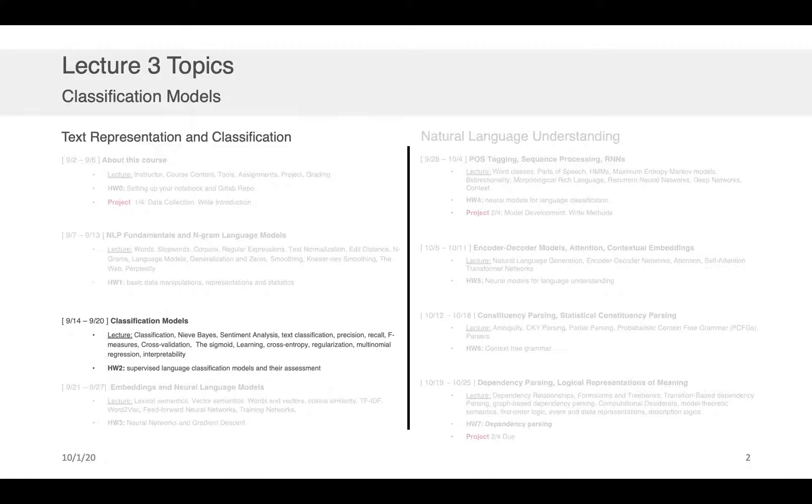Just a quick reminder, last week we spoke extensively about classification models. Specifically, we went through two examples or approaches to classification. The first was Naive Bayes, which represents a semi-Bayesian approach to the problem of classification, and we also spoke about logistic regression.